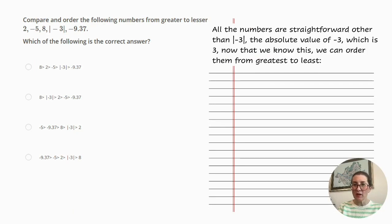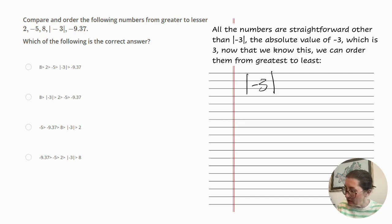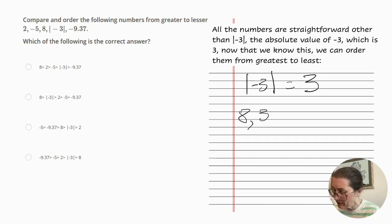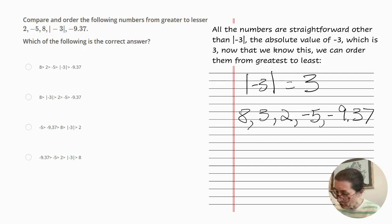The first question is as follows: compare and order the following numbers from greater to lesser. We have 2, negative 5, 8, the absolute value of negative 3, and negative 9.37. The absolute value of negative 3 is equal to 3. So we can order them from greatest to least: 8, then 3, then 2, then negative 5, and finally negative 9.37. And there's our answer.